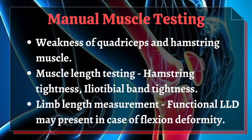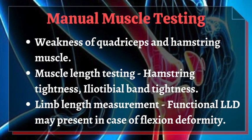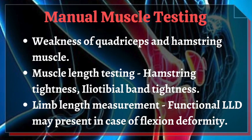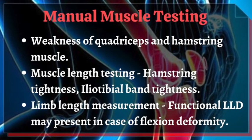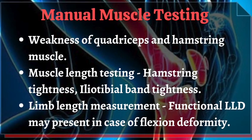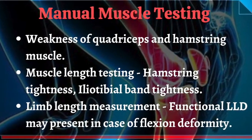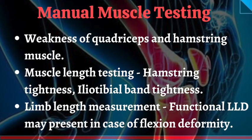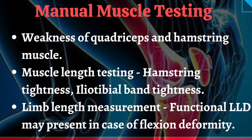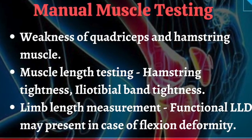For strength measurement, muscle grading is performed with manual muscle testing or by performing isometric resistance tests. There is weakness of quadriceps and hamstring muscles in osteoarthritis. Hamstring tightness and iliotibial band tightness might be found in muscle length testing, and functional limb length discrepancy may be present in cases of flexion deformity.